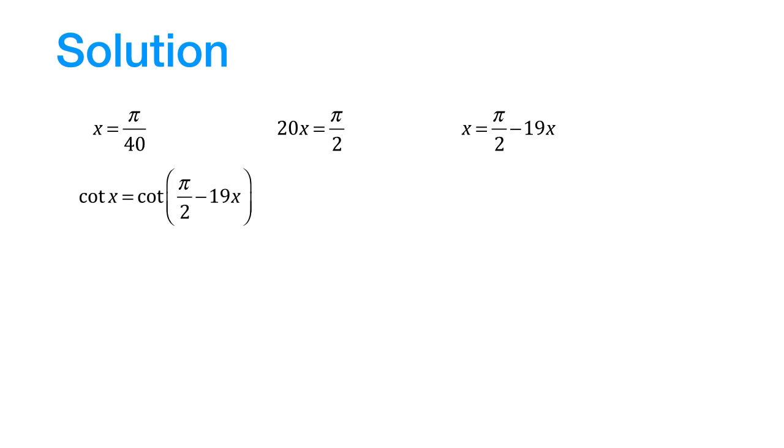Now, from here, if we take cot on both sides, we can say that cot x would be equal to cot of π by 2 minus 19x. Now the right hand side here is equal to tan of 19x by using the complementary angle formula.